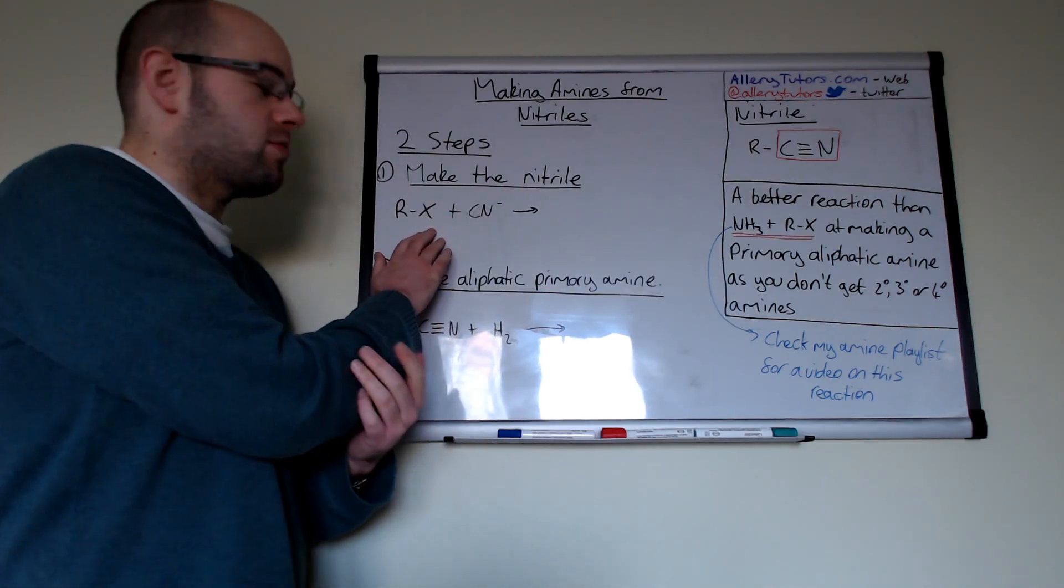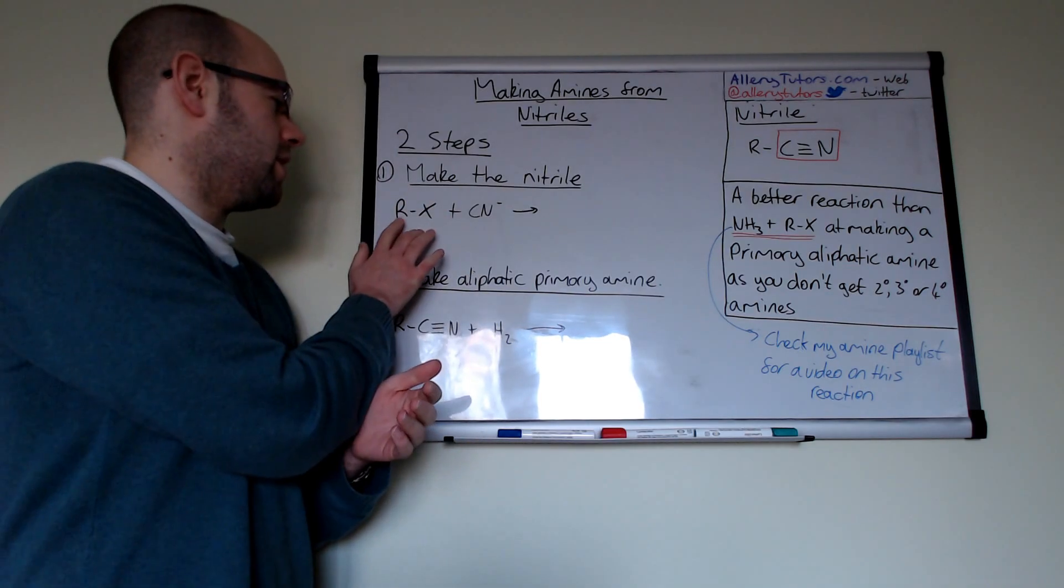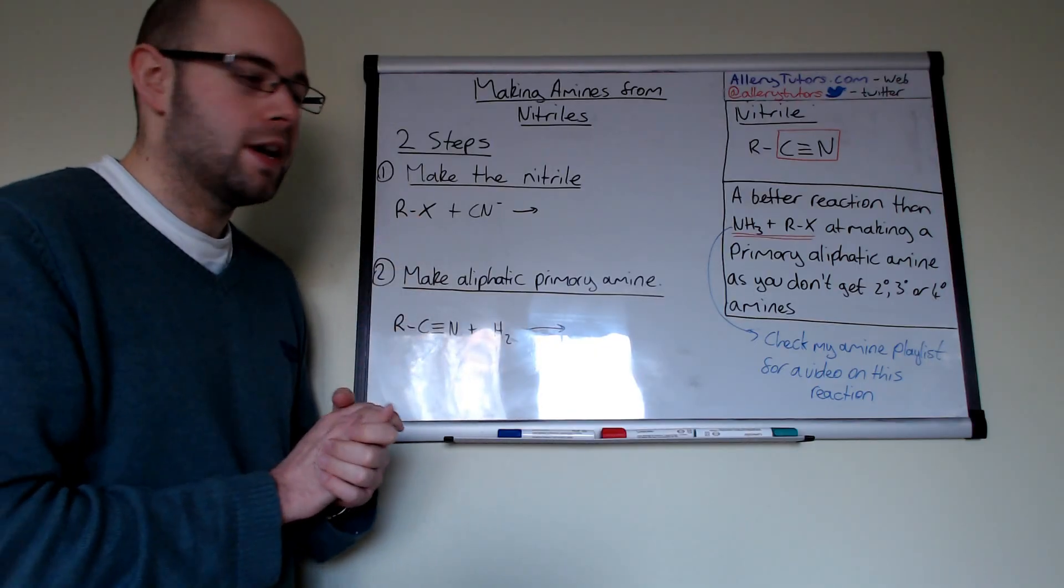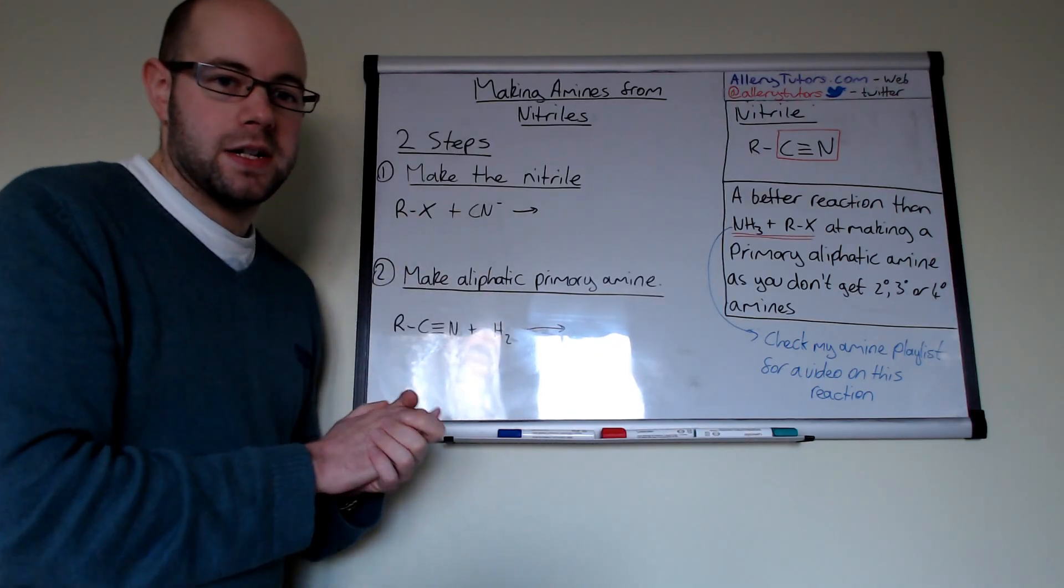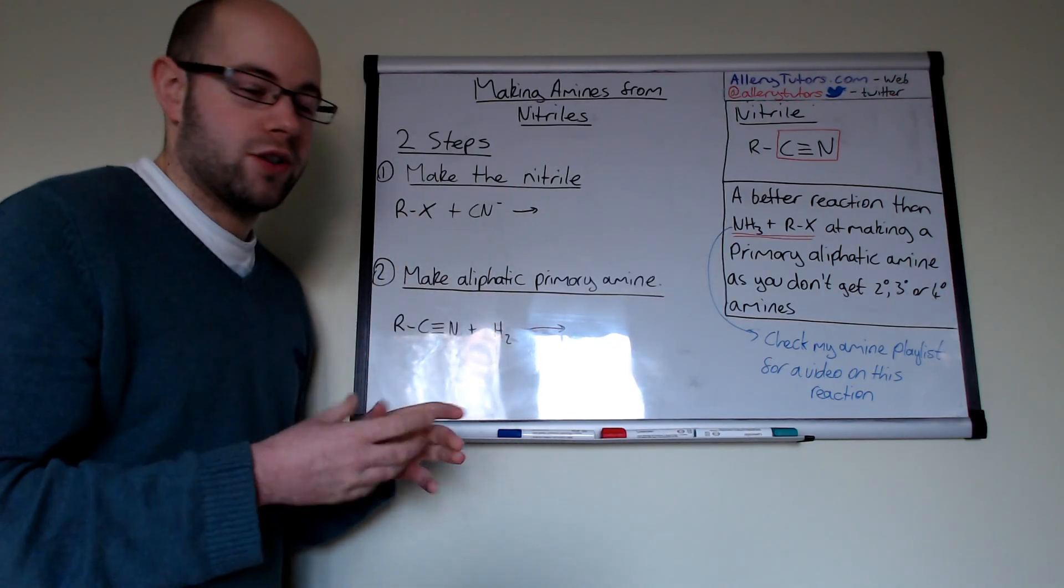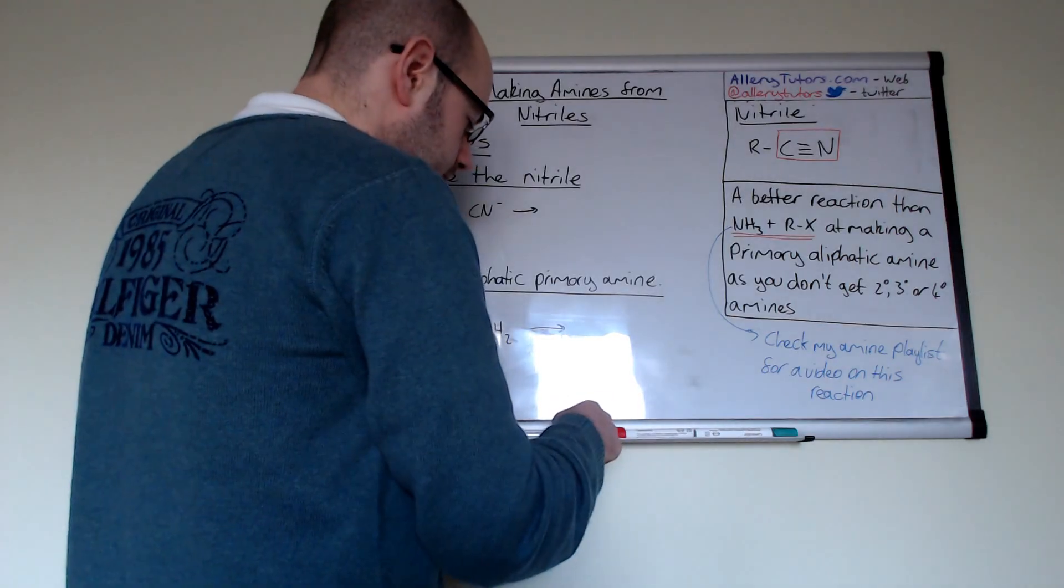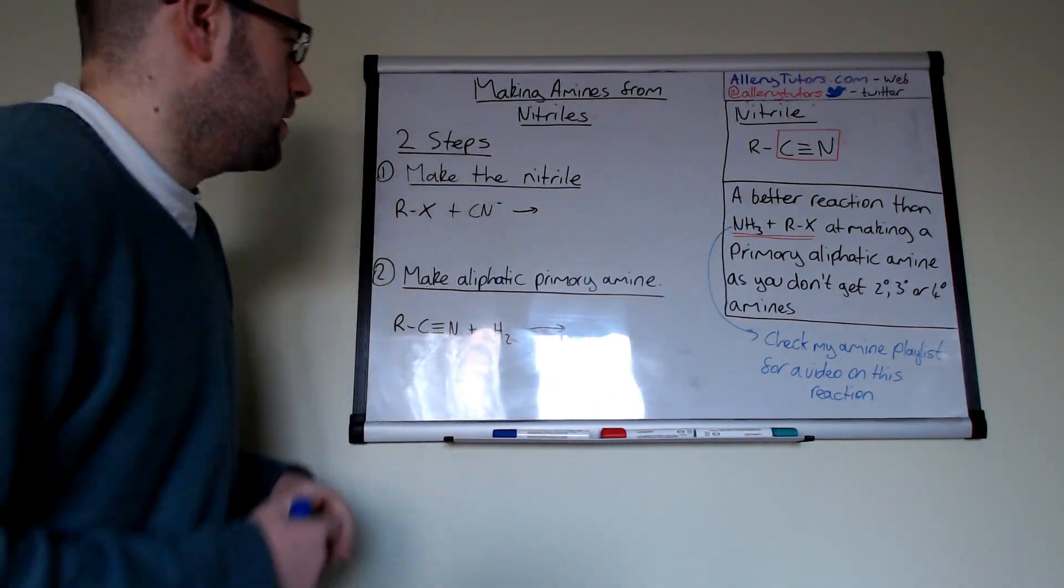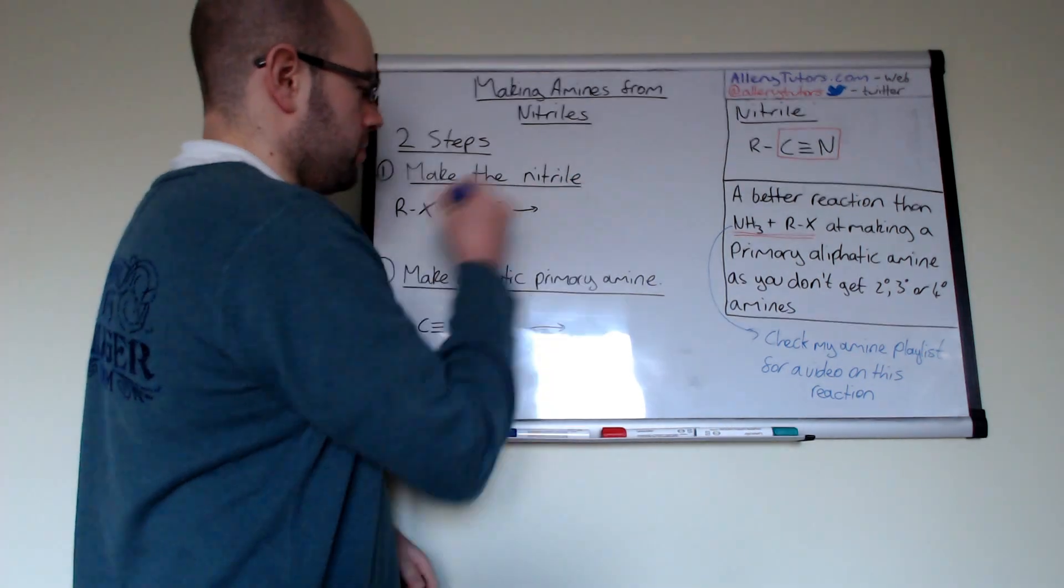Now you can make your nitrile by reacting it with a halo alkane which in this case I've just represented as Rx and if we react that with cyanide ion we actually make our nitrile from there. So what I'm going to do is we're going to do this on the board here.